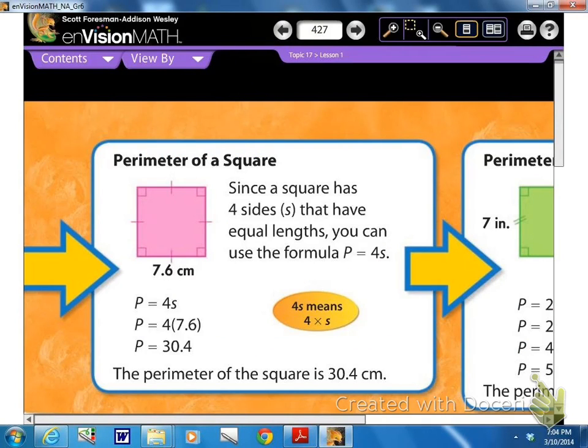All right, so that's one way to find the perimeter, especially of an irregular figure. You want to just add all the sides together, but sometimes you're going to find the perimeter of a regular polygon, something like a square.